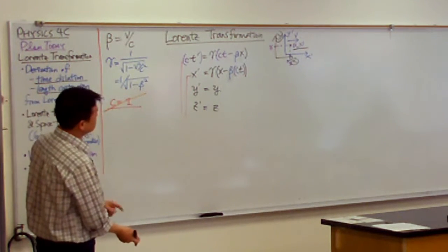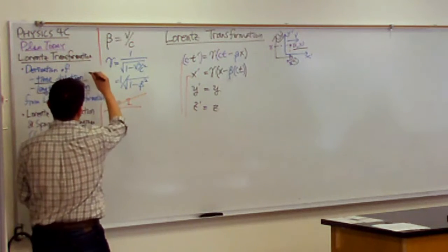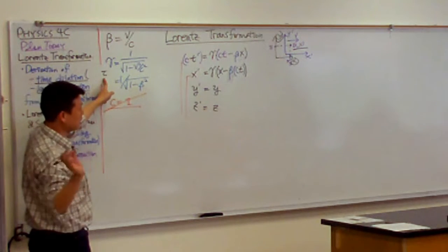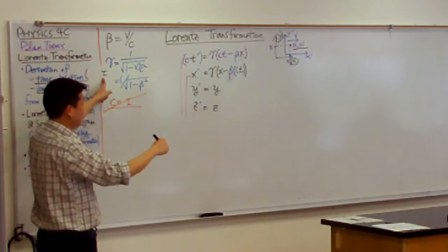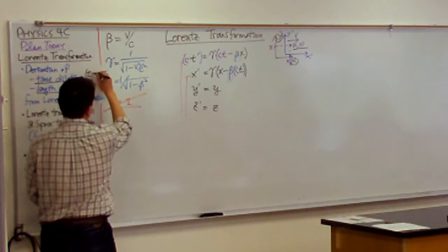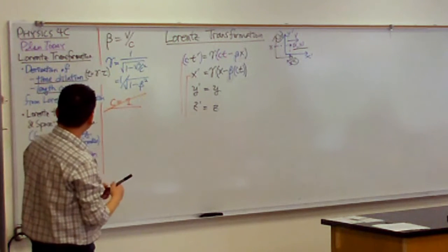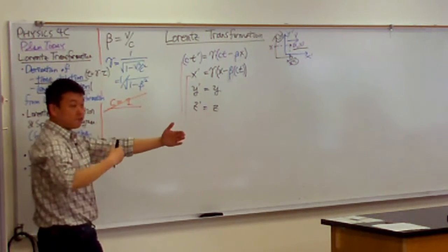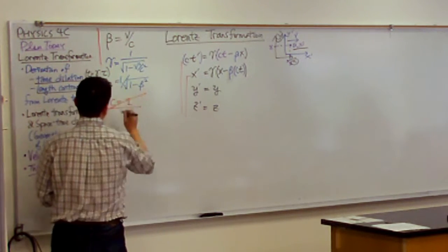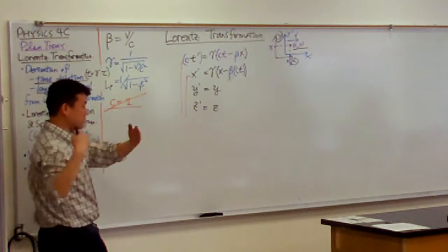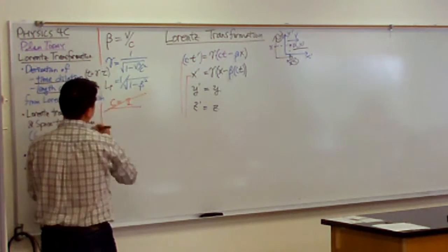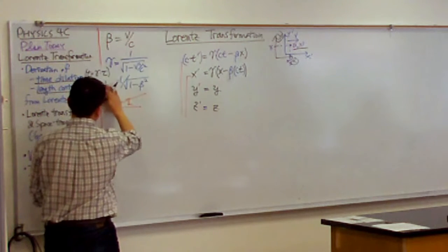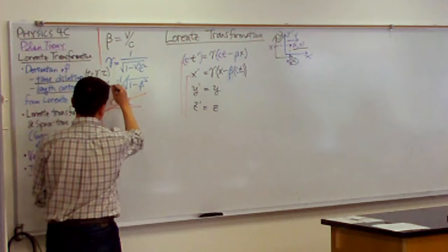So with time dilation, if you have some clock that's measuring its own time — proper time — and its clock is going by you, and you measure the ticking of the clock with your own clock, then the time you measure is gamma times the proper time. And with a ruler, if you have some ruler of its own length — proper length — measured in its own reference frame, then as the ruler is going by you, the length you measure is contracted, so it's shorter. So it's not proper length times gamma, it's proper length divided by gamma.